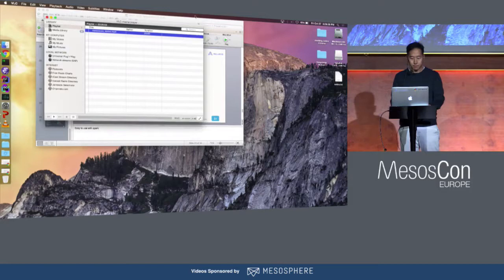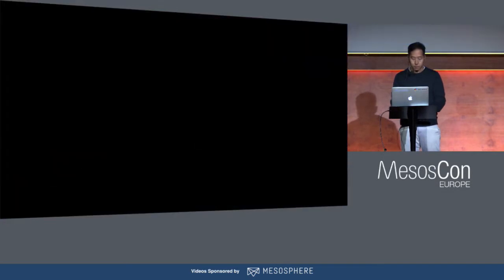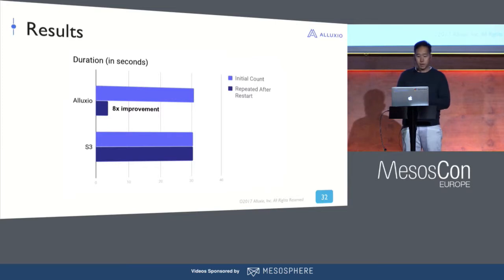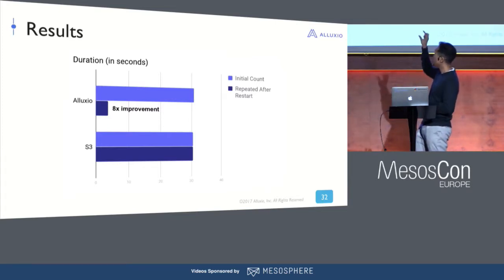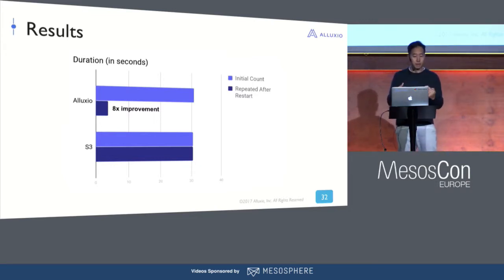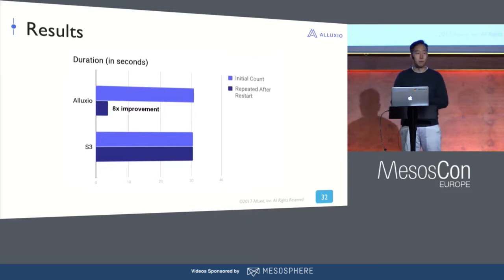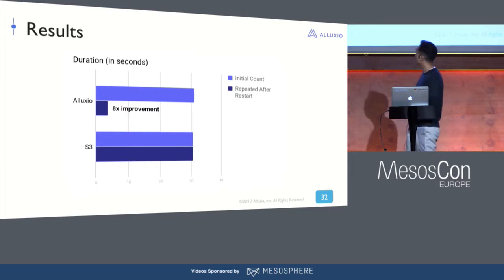Here are the results from the demo. This chart shows the duration in seconds for that RDD count. The light blue top lines of each section represent the first time you ran the count, and the second line is the second time. If you run directly on S3, it takes the same amount of time both times because you're accessing S3 again. But with Alluxio, the second time you read it, it reads from Alluxio memory since it's already been cached — making IO much faster. In this example, it's eight times faster because the data is already in Alluxio.